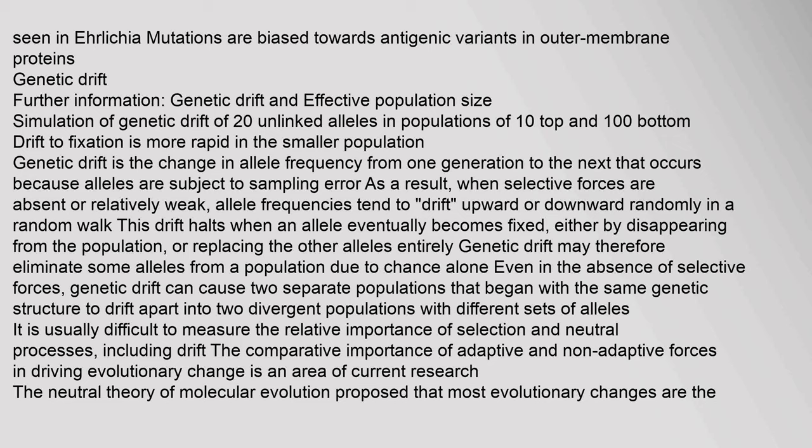Genetic Drift: Genetic drift is the change in allele frequency from one generation to the next that occurs because alleles are subject to sampling error. When selective forces are absent or relatively weak, allele frequencies tend to drift upward or downward randomly in a random walk. This drift halts when an allele eventually becomes fixed, either by disappearing from the population or by replacing all other alleles entirely. Genetic drift may therefore eliminate some alleles from a population due to chance alone, even in the absence of selective forces. Genetic drift can also cause two separate populations that began with the same genetic structure to drift apart into two divergent populations with different sets of alleles.